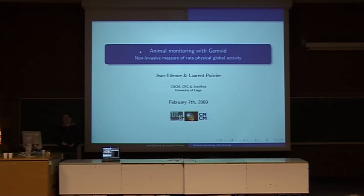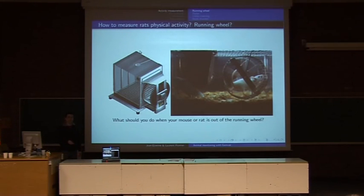Obviously, we were not the first to think about something to measure the activity of animals. The first device that comes to mind is the running wheel. You have a wheel, and your mouse or rat is just there running. The problem is, what are you doing when your mouse or rat is outside the running wheel? You can't put the rat there for 24 hours a day. The second problem is that you measure only the motor activity and not the general activity. If the rat is just moving the head, you can't measure it.